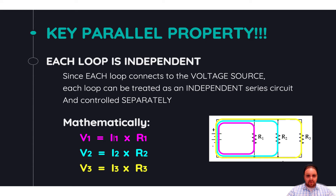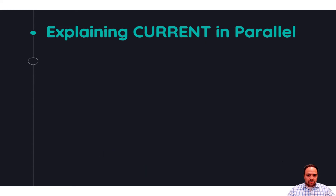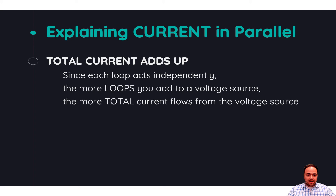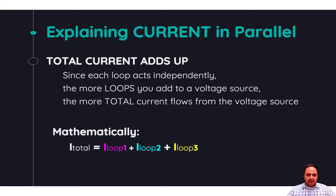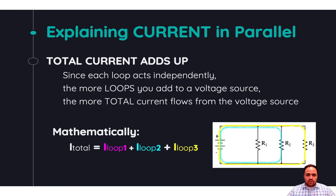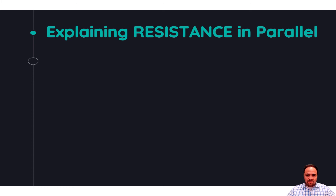With current in parallel circuits, since each loop is independent, each loop can have its own amount of current based on the resistors in that loop. But if we want the total circuit current — the total current the voltage source has to supply — we add up all the current values from each of the loops. The more loops you add to the voltage source, the more total current needs to be drawn. Mathematically, total current equals the current of all loops added together.